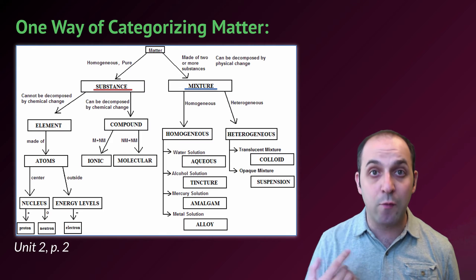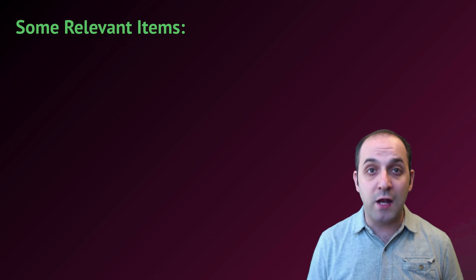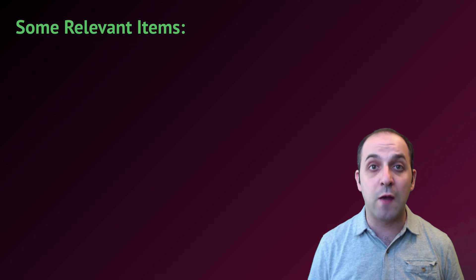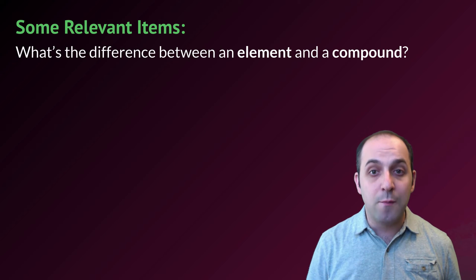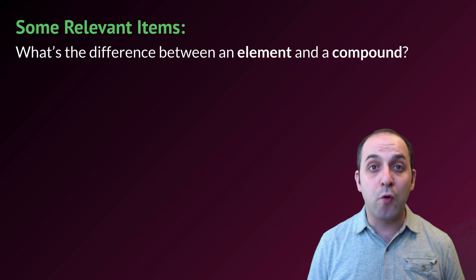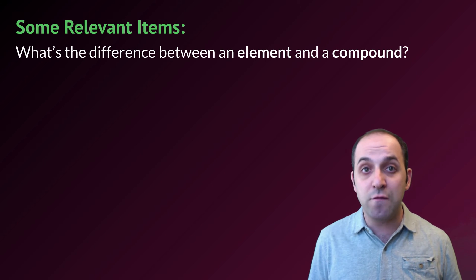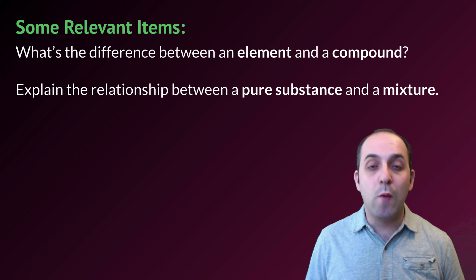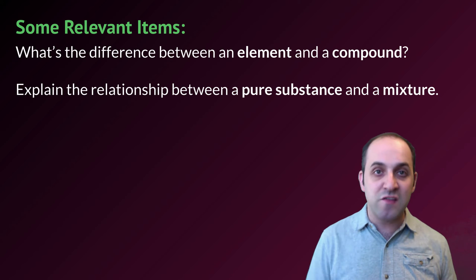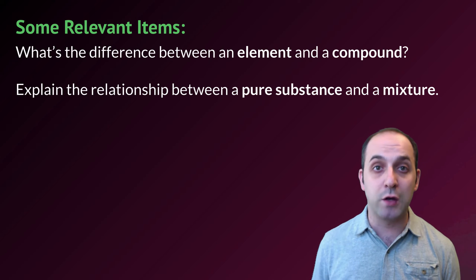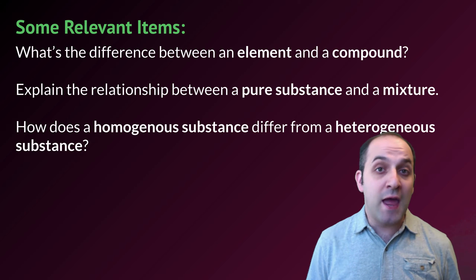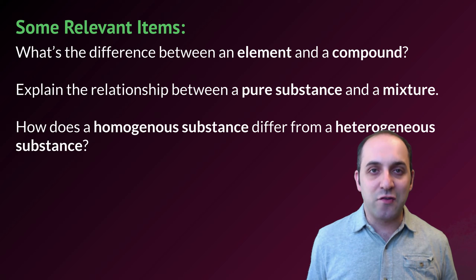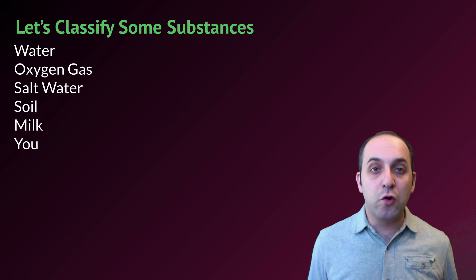There are a couple of relevant questions I'd like you to jot down answers to before we discuss them in class. First: what's the difference between an element and a compound? Second: what's the relationship between a pure substance and a mixture? And third: how does a homogeneous substance differ from a heterogeneous substance? Take a moment and jot down some answers, then let's move on.